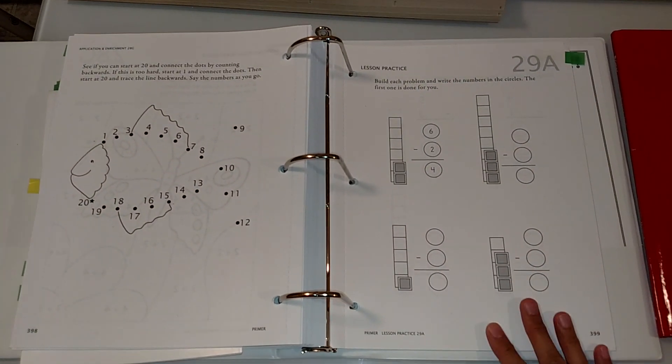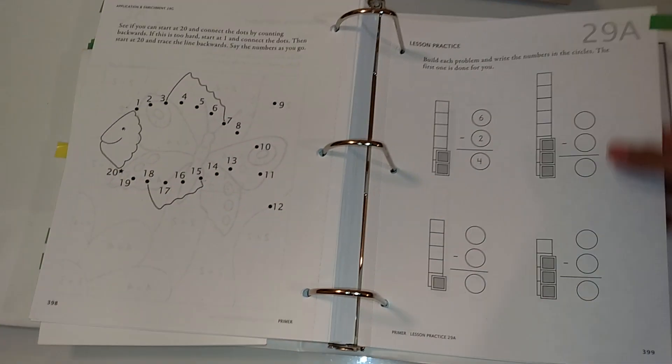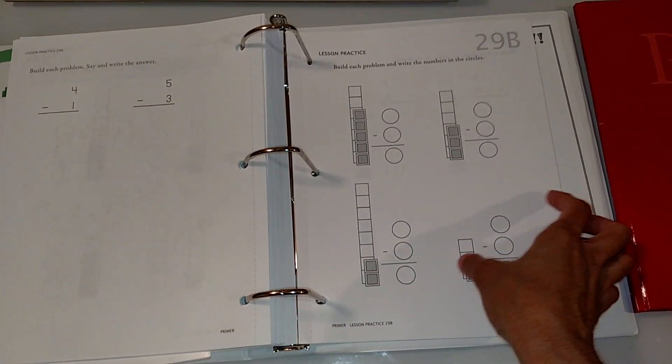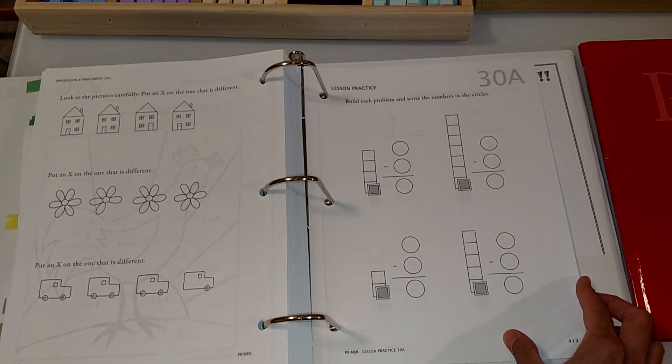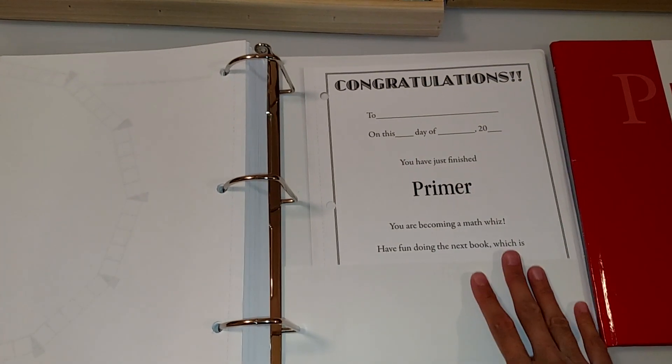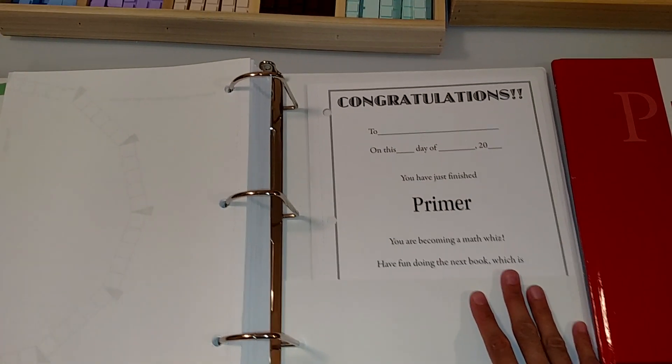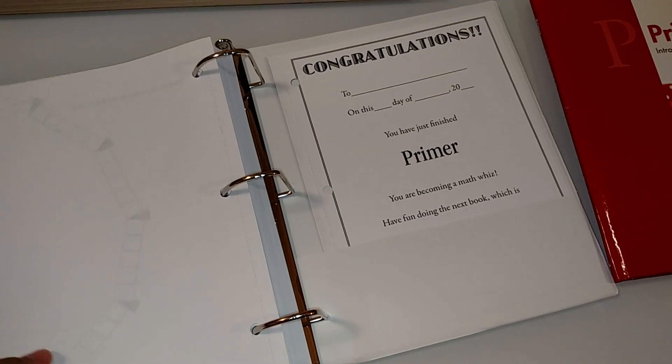And then at the end it briefly introduces subtraction, very briefly. Mainly it just focuses on addition and number quantity and numbers zero through nine in the beginning. But then at the end they do focus a little bit on subtraction. So that's the end of it. At the end you give your child a certificate that they have completed the curriculum and then you can move on to their next curriculum for the first graders.